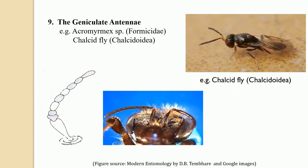The next type is geniculate antennae. In geniculate antennae, the whole antennae are bent completely at the scape-pedicel joint. If such a bent antennae or an angle between the scape and pedicel is found, such antennae are referred to as geniculate antennae. Geniculate antennae are found in chalcid flies belonging to the Chalcidoidea and also in the genus Iridomyrmex belonging to the family Formicidae.